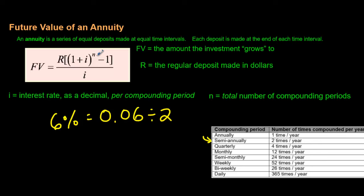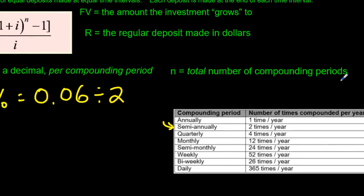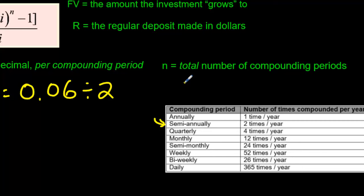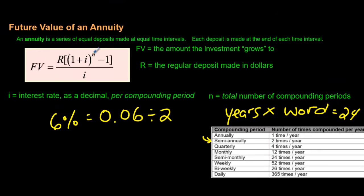And to find n right over here, that's the total number of compounding periods. So what you do is you take the years, so let's say it was like 12 years, and you multiply, not divide, you multiply by the word. And if the word was semi-annually, you'd say okay 12 years times semi-annually, that's 2. 12 times 2 is going to be 24. And that 24 you would put in the exponent right up here. But enough talk about that because we should practice these questions for real. So here we go.